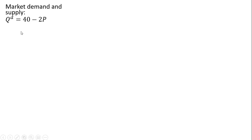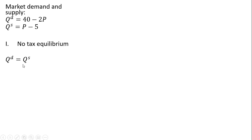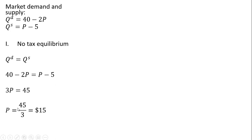We have a market demand and supply given by the following equations. Here's our demand equation and our supply equation. We'll first get the no-tax equilibrium, so no taxes in this market. We're going to set the two equations equal to one another and solve for the price, dividing through by three. The equilibrium price is $15. Taking this 15 and plugging it back into the supply equation, we get an equilibrium quantity of 10.